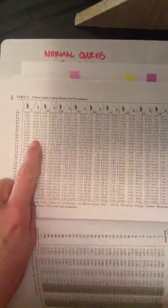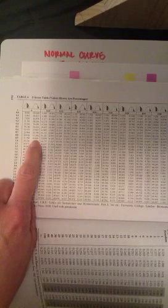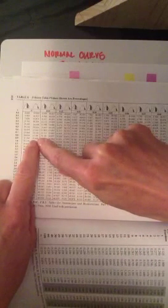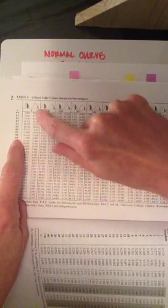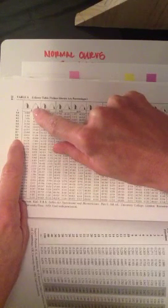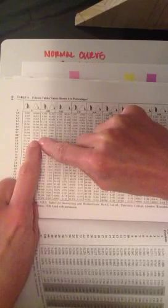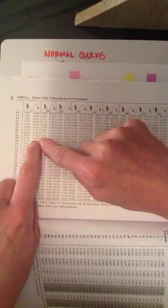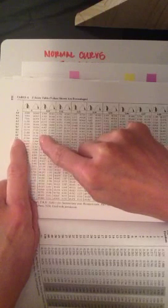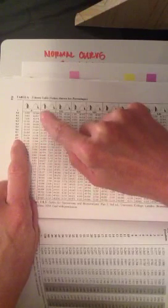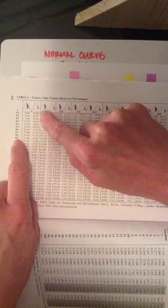We find that right here on this z-score table. So in order to transform this to a z-score, I simply move to the left to see that it would be 0.9 and move to the top to see that there would be a zero in the hundredths place. So my z-score for a percentile or cumulative percent of 18.4 would be negative 0.90.